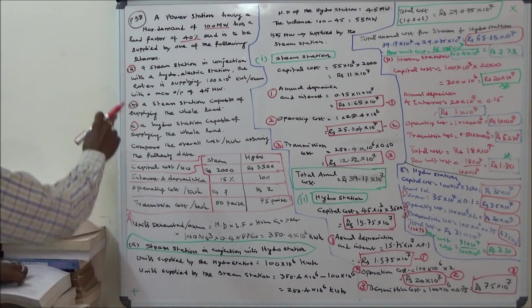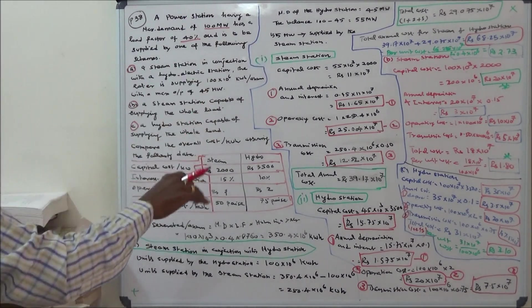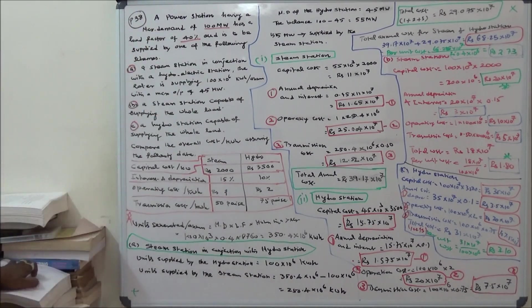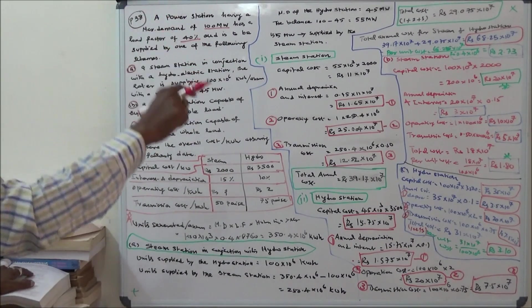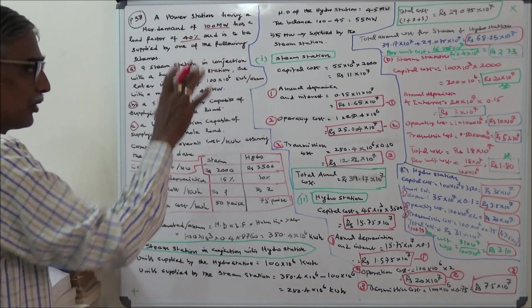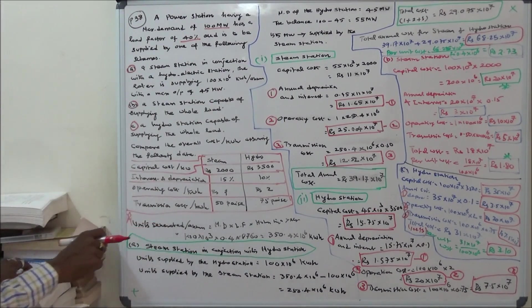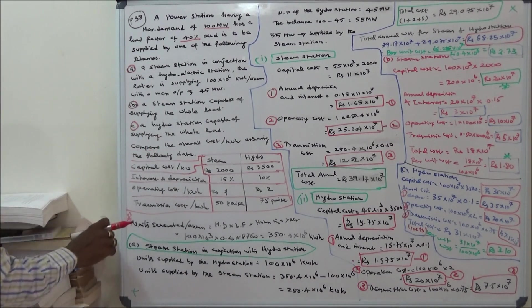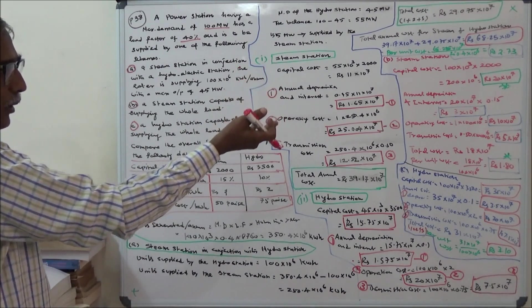Scheme B: Steam station capable of supplying the whole load. Capital cost: 100 into 10 power 3 into 2000 equals rupees 20 crores. Annual interest and depreciation is 15% of 20 crores equals rupees 3 crores. Operating cost is rupees 1 per kilowatt hour: 1 into 350.4 into 10 power 6 equals rupees 10 crores. Transmission cost is 50 paise per kilowatt hour: 350.4 into 10 power 6 into 0.50 equals rupees 5 crores.